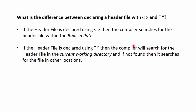Next question: what is the difference between declaring a header file with angular brackets and double quotes? If the header file is declared using angular brackets, the compiler searches for the header file within the built-in path. But if the header file is declared using double quotes, the compiler searches for the header file in the current working directory first, and if not found there, it searches in other locations.